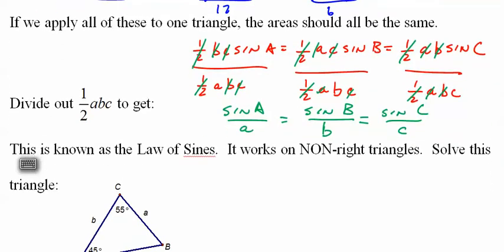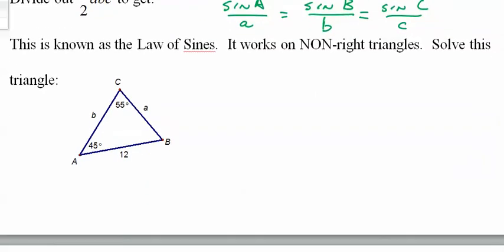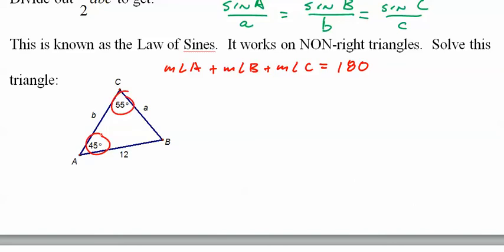The Law of Sines is quite easy to use, but you need to be good with proportions. Quick geometry review: all angles in a triangle add up to 180°. So if we know two angles are 55° and 45°, then B equals 180 minus 45 minus 55, which equals 80 degrees.